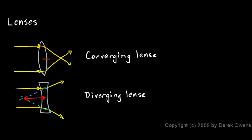So a diverging lens has a focal length just as a converging lens does. And exactly how long the focal length is is an indicator of how strong that lens is — it basically depends on the curvature, how much the glass is curved. A converging lens is sometimes referred to as a convex lens because its shape is convex, and a diverging lens is sometimes referred to as a concave lens because its shape is concave.